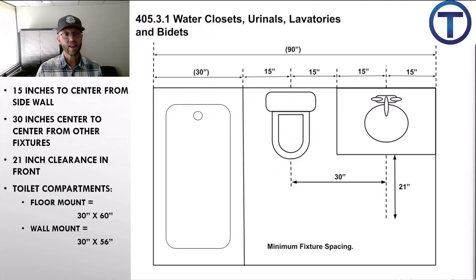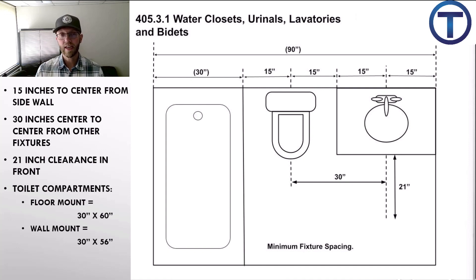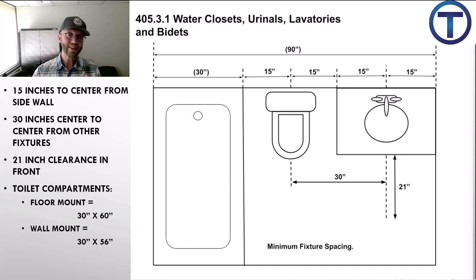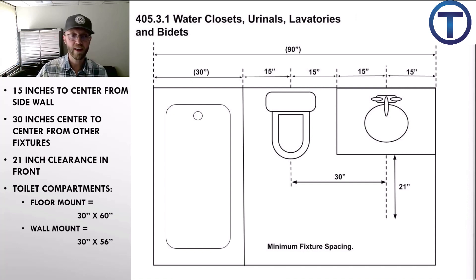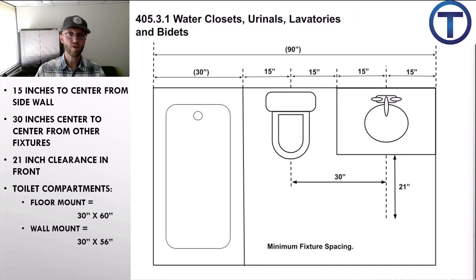405.3.1 is probably one of the most important sections of this entire chapter — one you should definitely memorize. This gives us the details for the distances between fixtures. This is how you know where to put your pipes on the rough, because you lay it out and say: I need to be a certain distance from the wall, from fixtures, in order to maintain minimum space requirements. This one is critical.